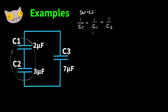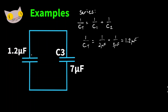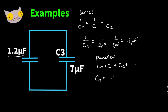Recall the equation for series capacitors: 1 over C total equals 1 over C1 plus 1 over C2. So we get 1 over C total equals 1 over 2 microfarads plus 1 over 3 microfarads, which gives us about 1.2 microfarads. Those two capacitors became one equivalent capacitor worth 1.2 microfarads, and now we're left with two capacitors in a parallel configuration. To find total capacitance of parallel capacitors, we just add them up: 1.2 microfarads plus 7 microfarads gives us 8.2 microfarads.